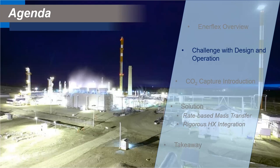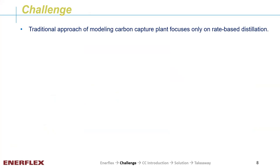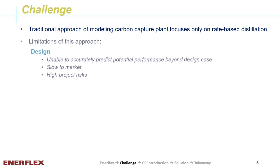We are now arriving at the challenge station. The biggest challenge is probably how to accurately model how much CO2 is captured in the distillation column. People spent decades studying the reaction between acid gas and amine. Finally, rate-based distillation was developed and is now well adopted. Rate-based distillation solved the most important problem, but it still has some limitations.